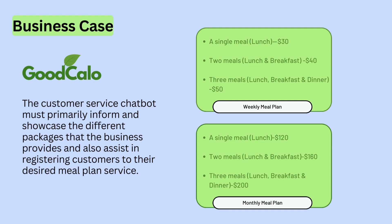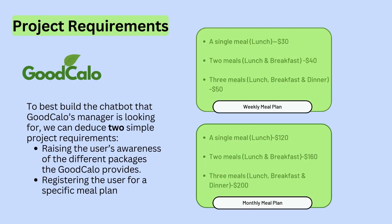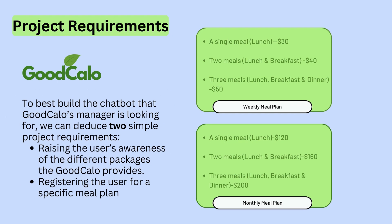To build the best chatbot to satisfy GoodCalo's manager, let's deduce some project requirements from the general requirements given to us. We will be working with two project requirements: first, we should showcase and raise the awareness of our users about the different packages of GoodCalo. The second requirement is to have our conversational assistant be aware enough to register users into specific meal plans. To do so, we will need the help of two Rasa mechanisms: entities and slots.